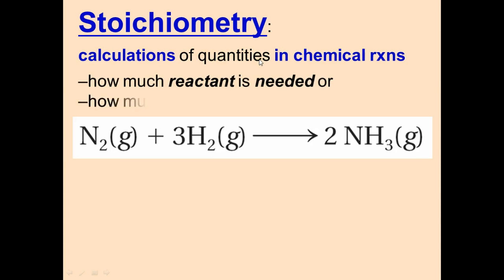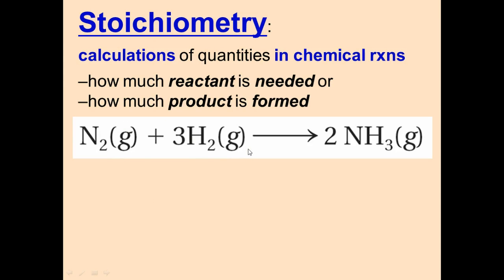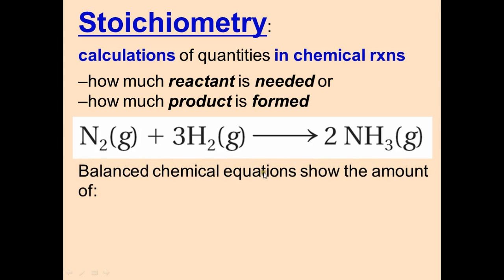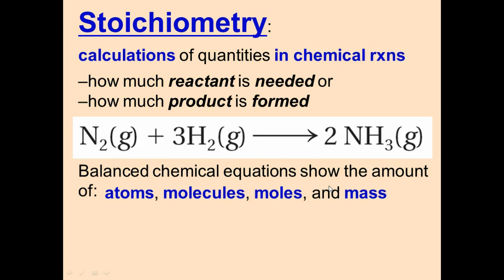With stoichiometry, you can find how many reactants are needed for a given amount of products, or how much product will be formed from a given amount of reactants. Stoichiometry is pretty important for chemists to figure out exactly how much reactants they need instead of just guessing. Balanced chemical equations show the amount of atoms, molecules, moles, and mass of the reaction.